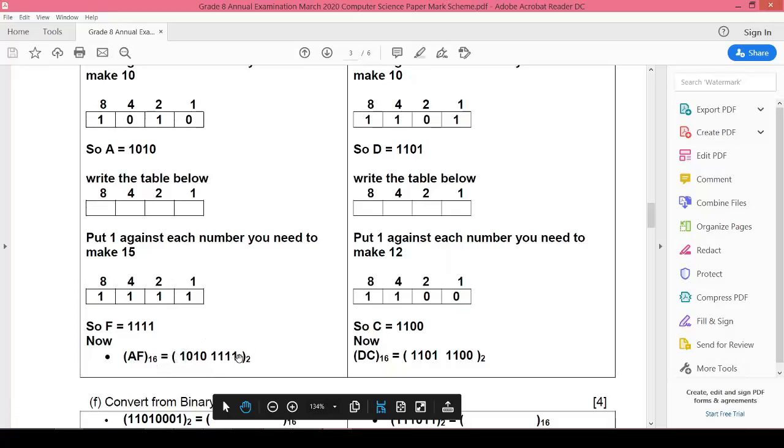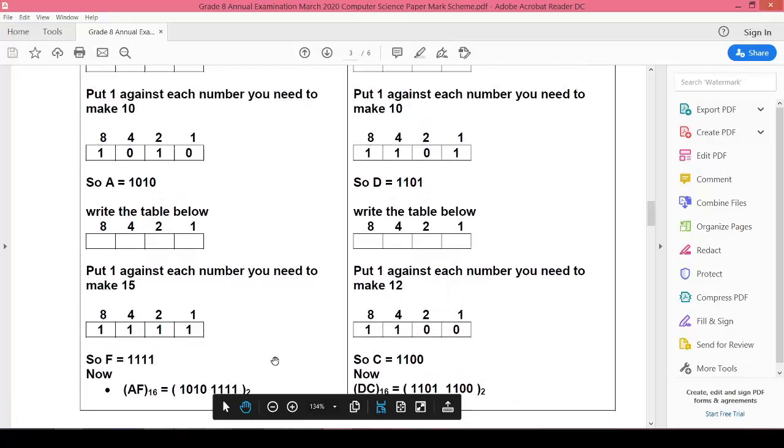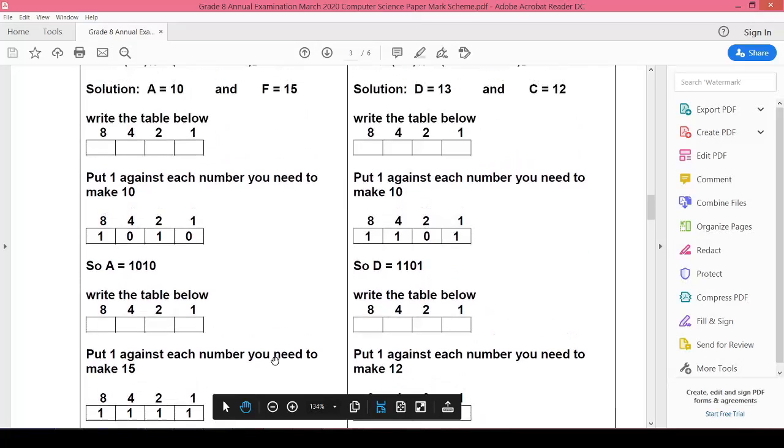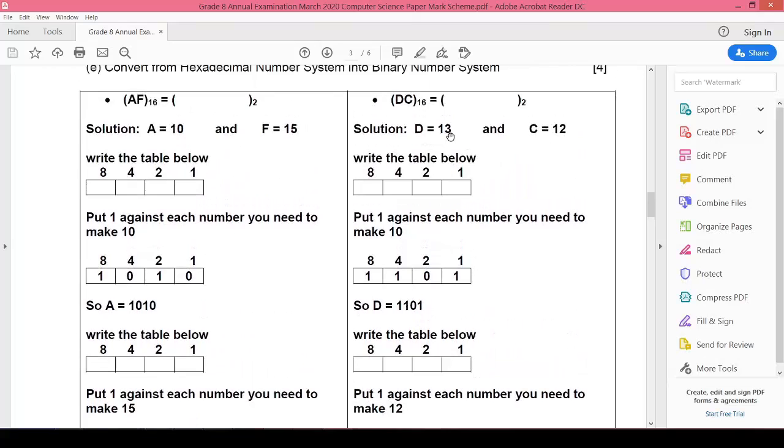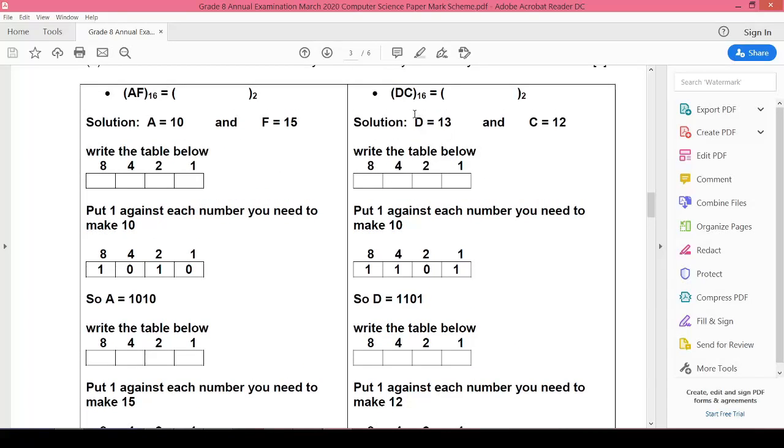Let's see now the other part. We are given DC16 and we have to convert it into binary. Look here, the code for D is 13 and C means 12. We will use the same method.